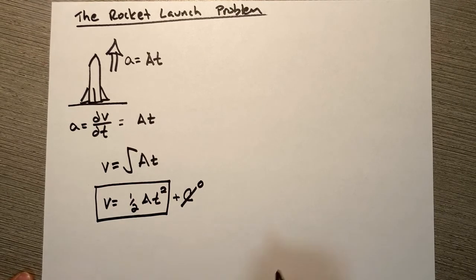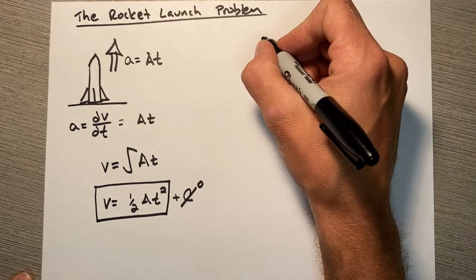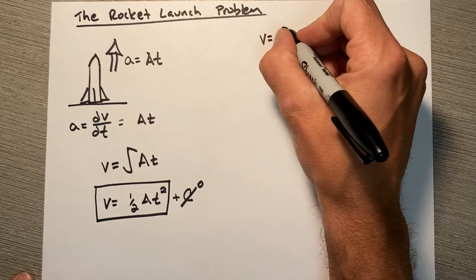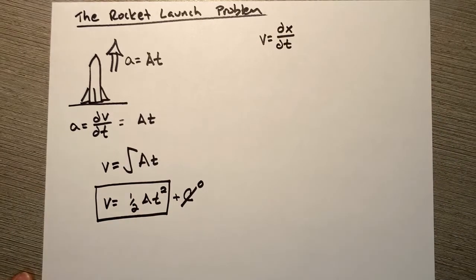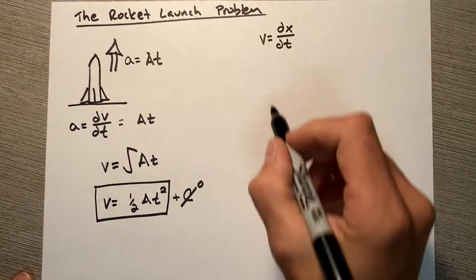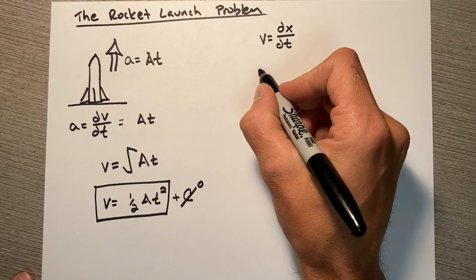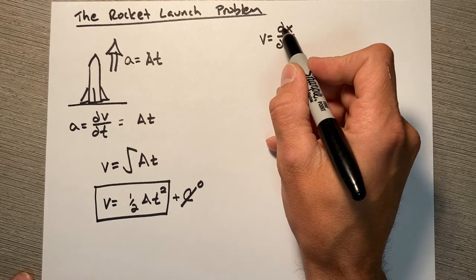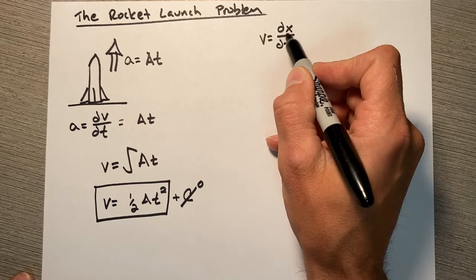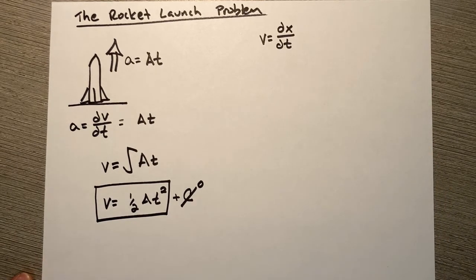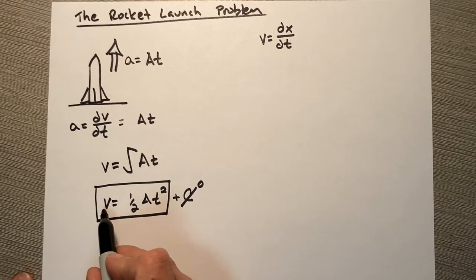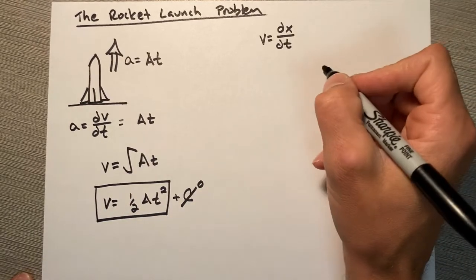Now we're going to do the same exact thing to get to position. We're going to look at the relationship between velocity and position versus time. And again, if we look at this, we have a change in position over change in time—that's how we define velocity. So we are again going to integrate, this time our velocity function, to get to position.